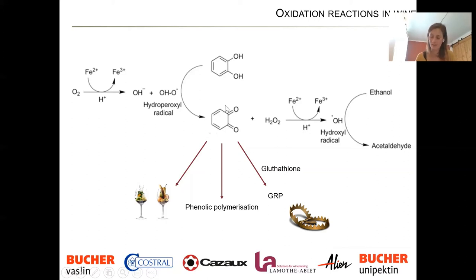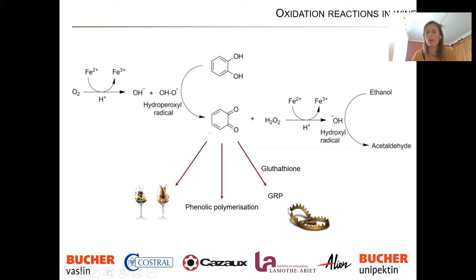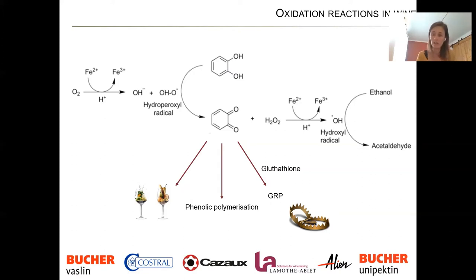This quinone is very unstable and can react with different components of the wine. The first is glutathione. This quinone reacts with glutathione to produce a molecule called GRP, or Grape Reaction Product. This stops the reaction — glutathione is a great natural antioxidant that acts as a quinone scavenger, blocking it and stopping the reactions.